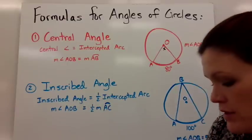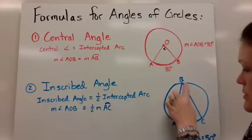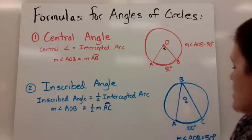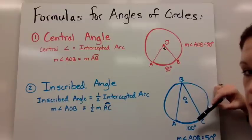The next kind of angle is an inscribed angle. An inscribed angle is when your angle is formed with all points on the circle. An inscribed angle is equal to half the measure of the intercepted arc.